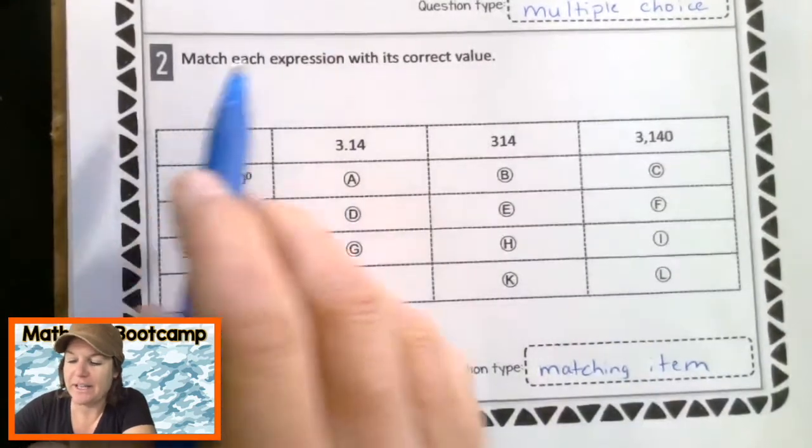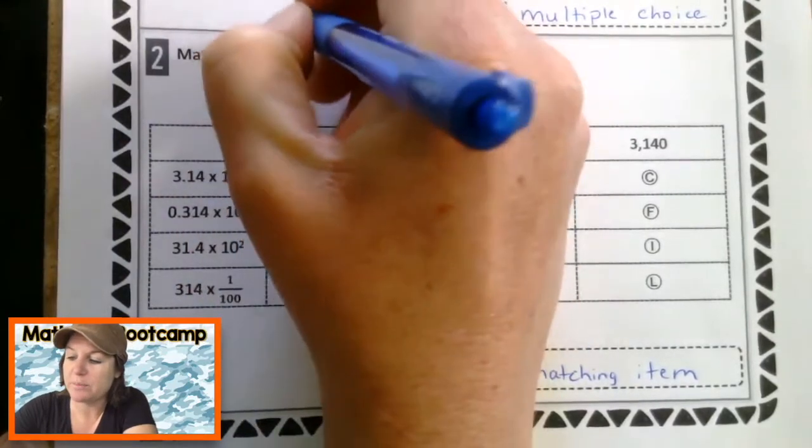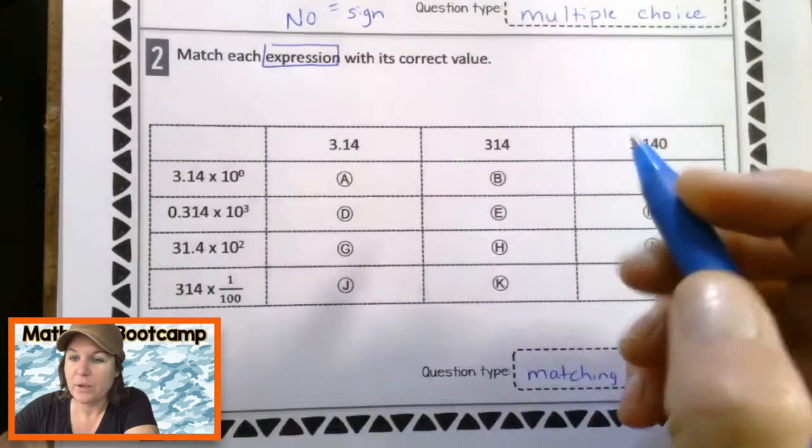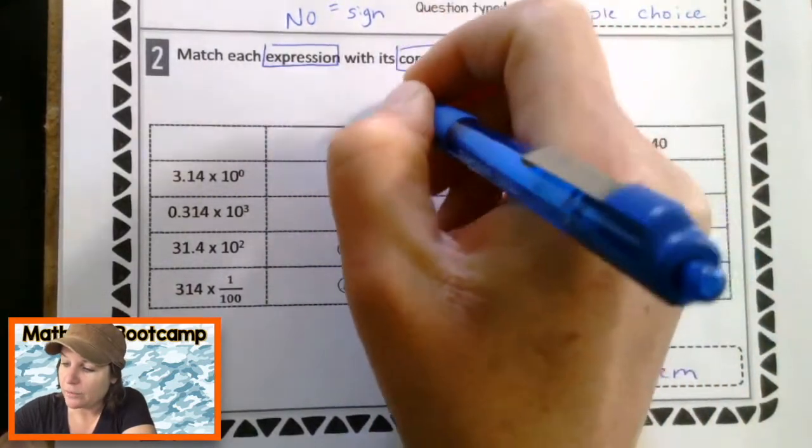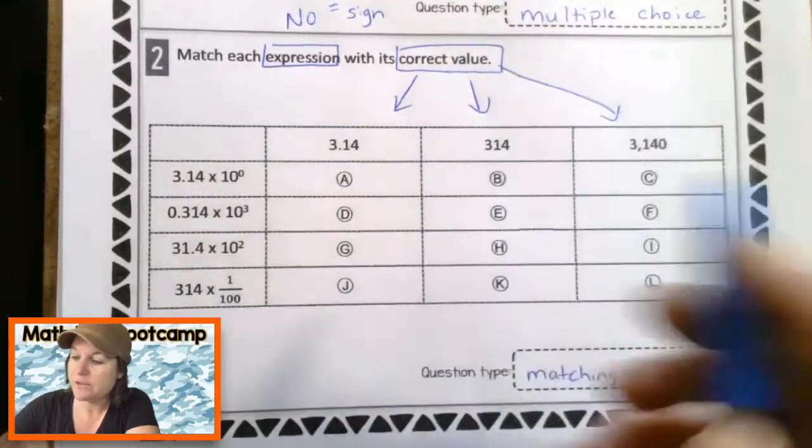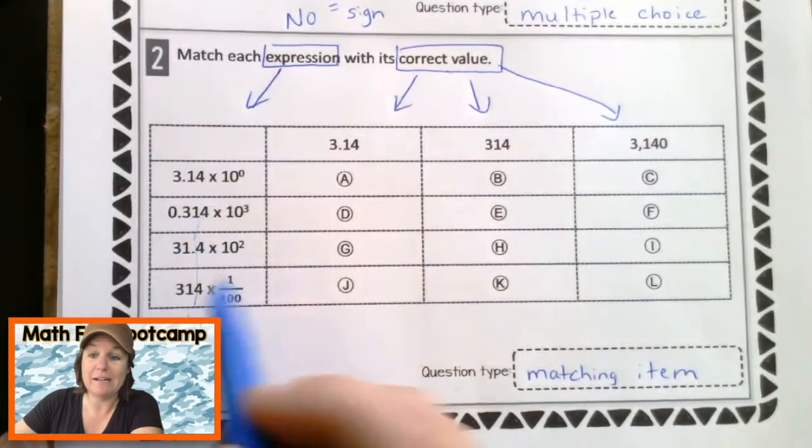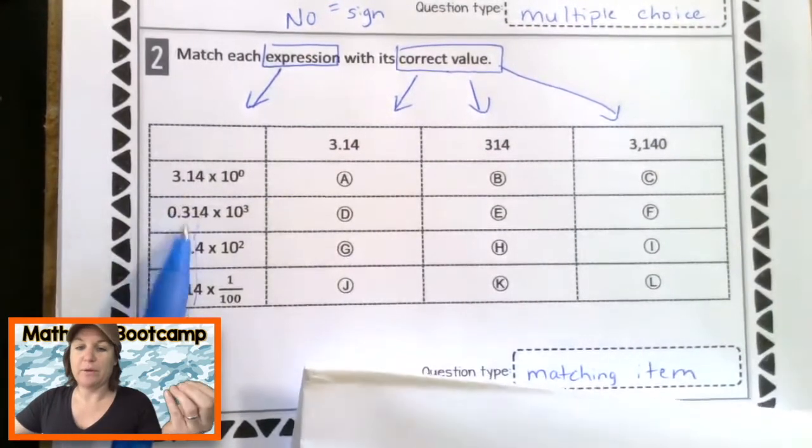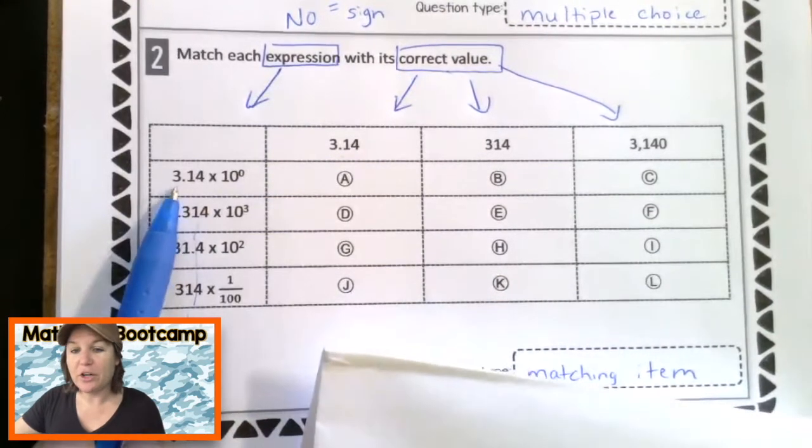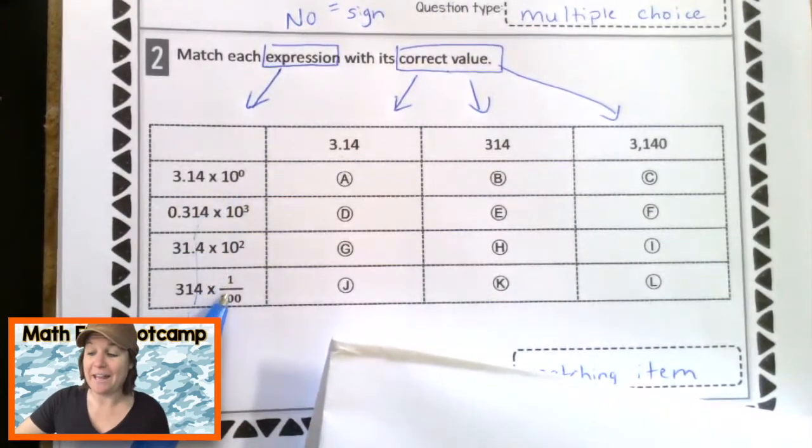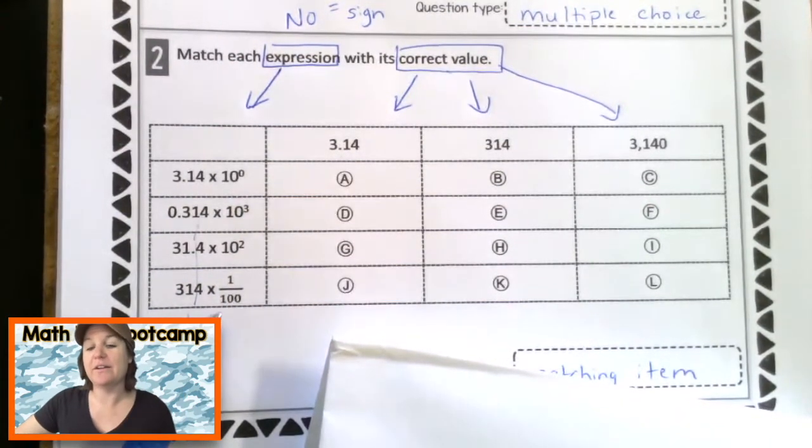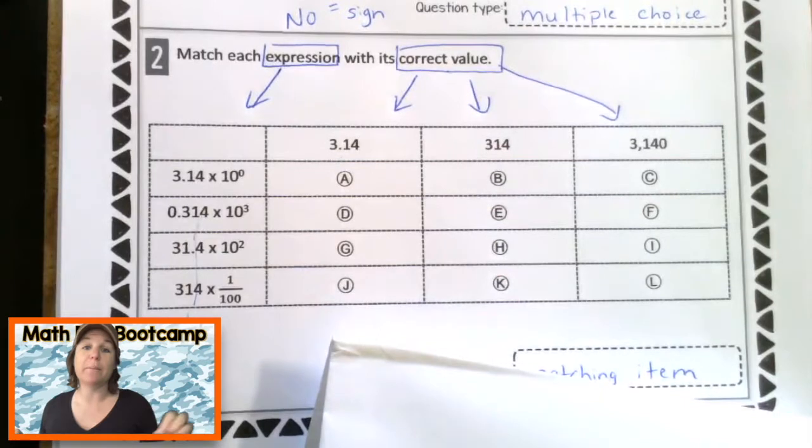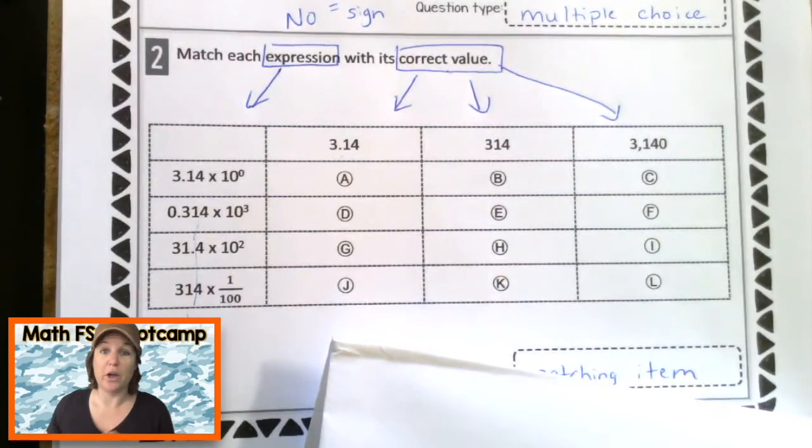It says match each expression and expression means that there is no equal sign, right? There's no equal sign with its correct value. So these are the correct values. So what we're going to do is take each expression that's right there and match it with the correct value. So let's start with the first column. I'm seeing that I have some numbers with decimals and I've got powers of 10 here and I'm either multiplying or in this case down here, I will actually be dividing it and we're going to go ahead and knock that out. But if you know that you need some more practice on multiplying and dividing by powers of 10, hang on until the end of the episode and I'm going to show you where to go to get some more practice.